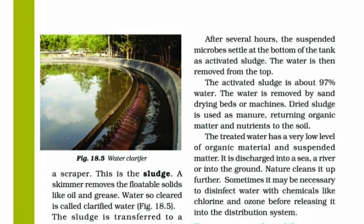The activated sludge is about 90% water. The water is removed by sun drying beds or machines. Dried sludge is used as manure, returning organic matter and nutrients to the soil.